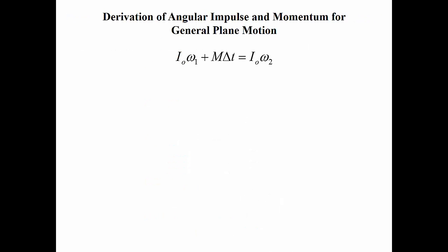Now let's look at the derivation of the angular impulse and momentum equation for general plane motion. Instead of just having pure rotation, we're going to have rotation and translation. Many times we can characterize this by shifting our mass moment of inertia to the point of rotation. In this case, we have our mass moment of inertia about point O. We write our equation for pure rotation, knowing that the mass moment of inertia about a shifted point is related to the mass moment of inertia of the center of gravity by the parallel axis theorem.